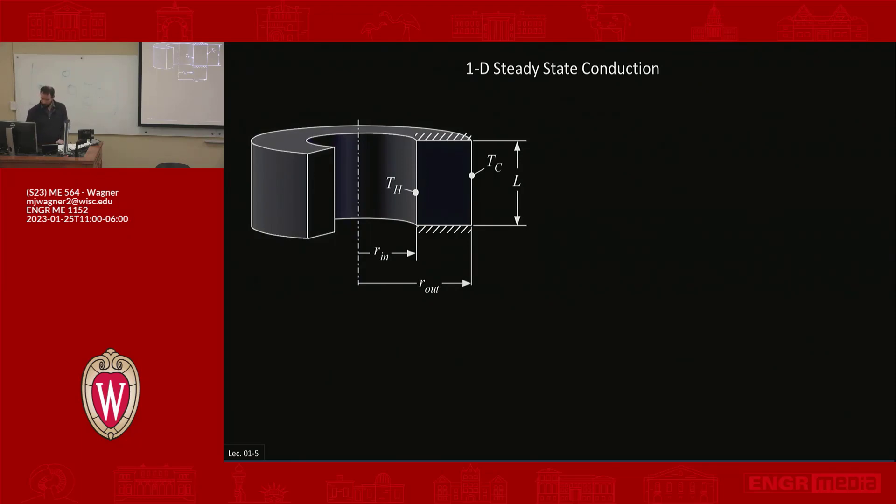So we have drawn here, we have like a washer and you have these hatch marks on the washer on the top and bottom. That indicates that that surface is well insulated. There's no heat transfer across that surface, which we'll call adiabatic. If you haven't heard that, it's adiabatic, which means that there's no gradient, no temperature gradient in that direction.